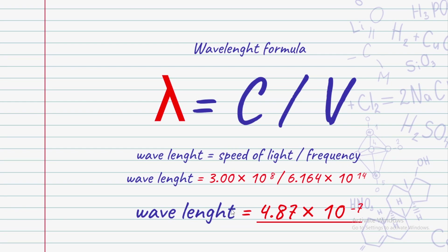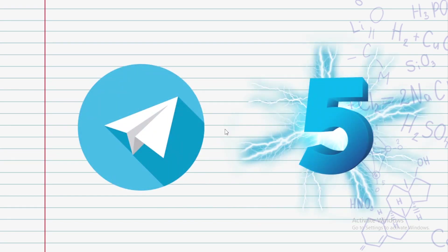The frequency is found and the wavelength is also found. From the change of energy we found frequency, and from frequency we found wavelength using the speed of light formula. That covers all the required calculations for this problem.